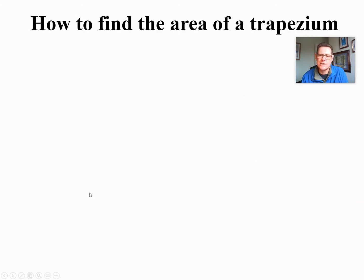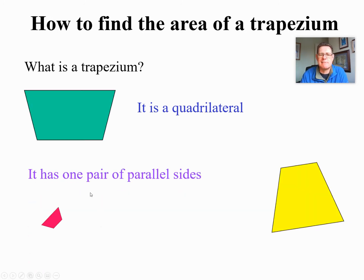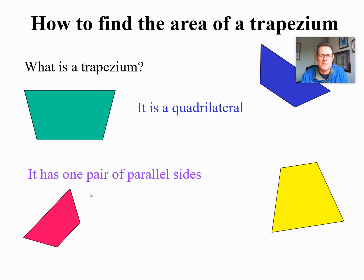So let's look at a trapezium. Let's remind ourselves what one is. Quadrilateral means it has four sides and it has one pair of parallel sides. So here are some examples. What we do is we label the sides A and B. Now it doesn't really matter which side is A and B as long as they're the parallel ones. We sometimes think of B as the base so A at the top, B at the bottom and that works quite nicely.